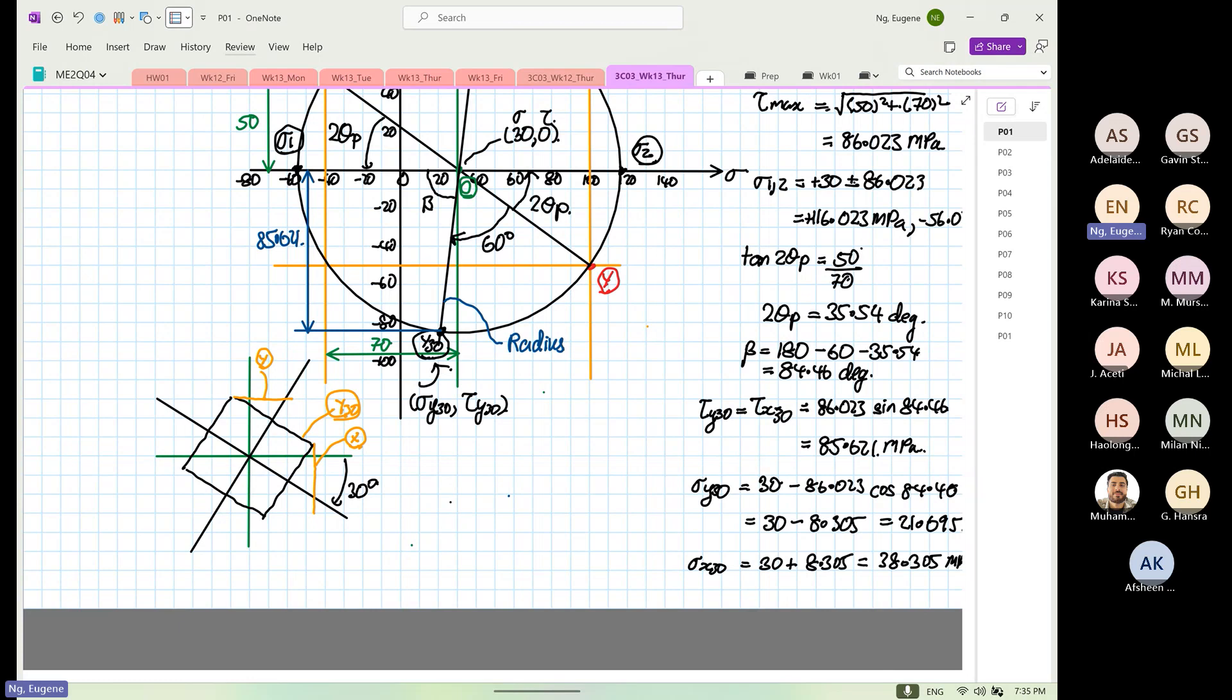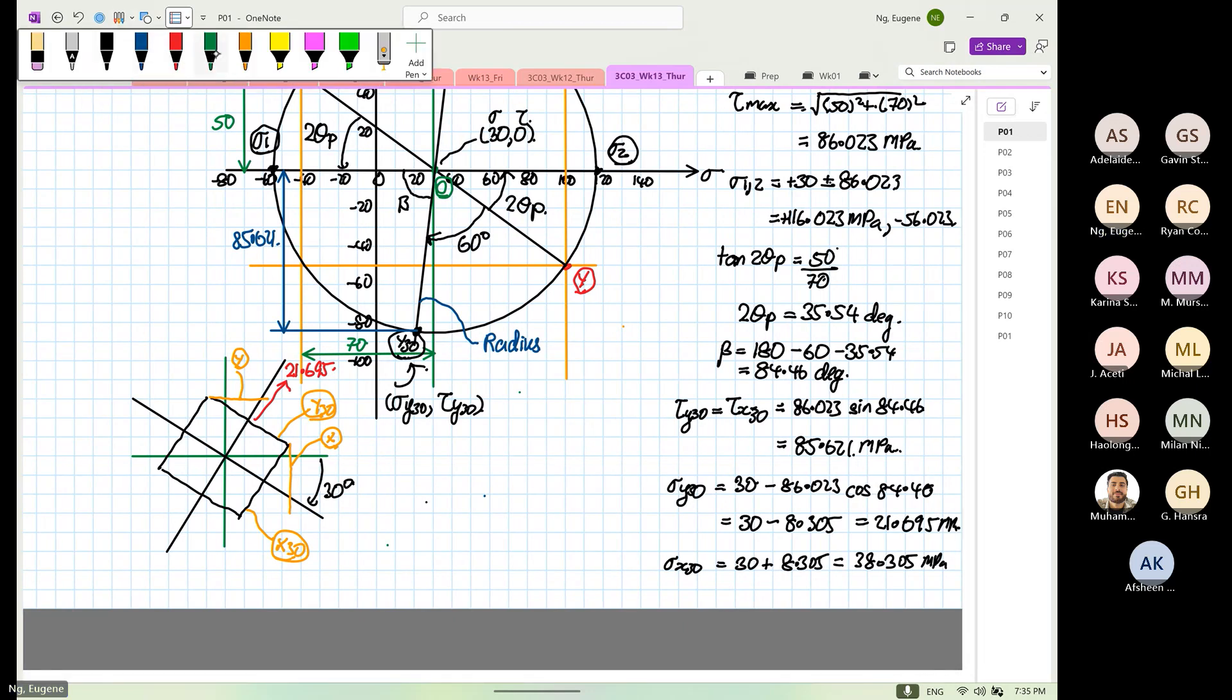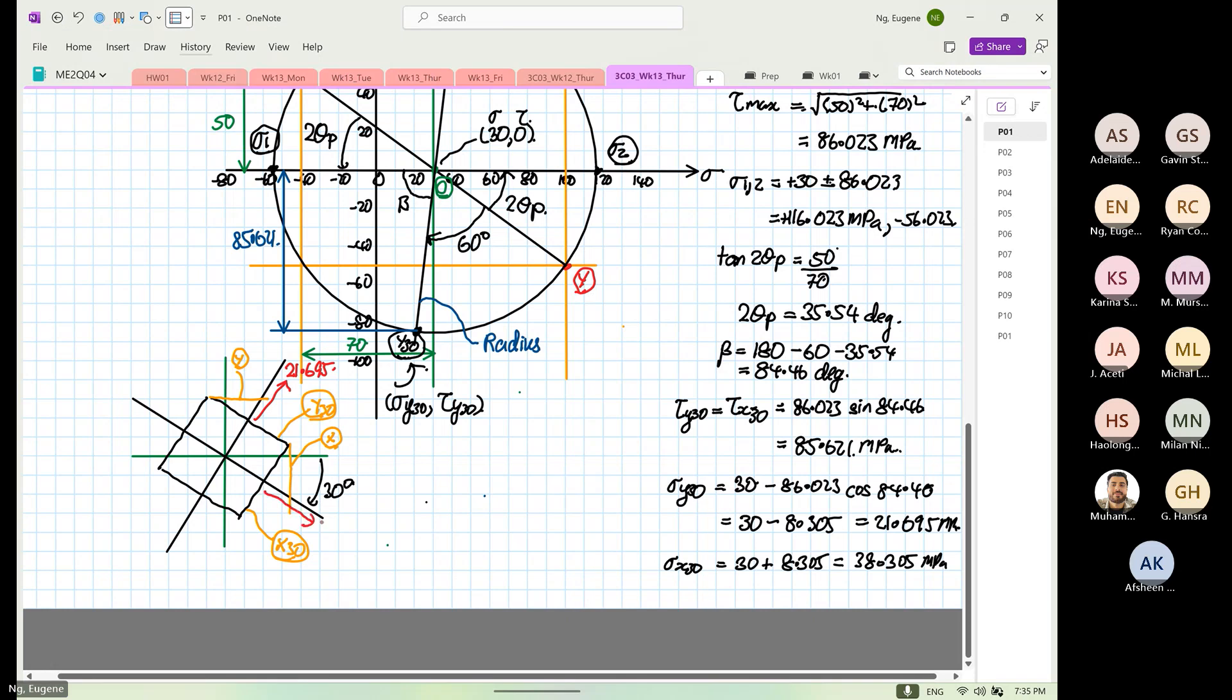From here, y30 is tensile, 21.695. We know that this is going to be 21.695. And we know if this is y30, over here has to be x30. So the normal stress will be equal to 38.305. The normal stress is the easy part now, it's not difficult.